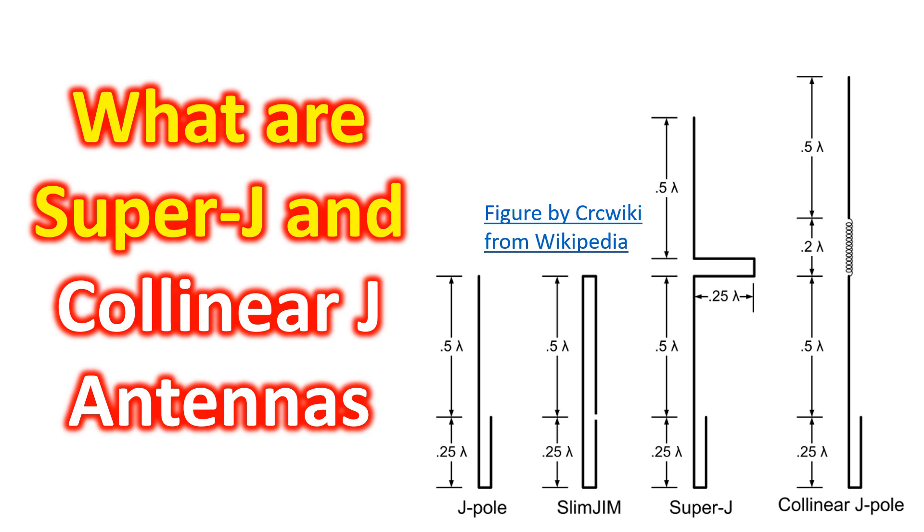While super J uses a quarter wave phasing stub, collinear J-pole uses a phasing coil with physical length of 0.2 wavelength which will give a more sleek appearance for the antenna.